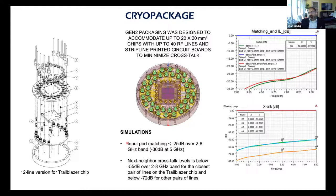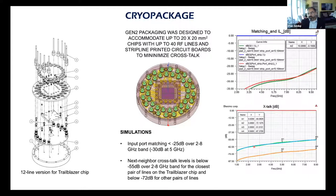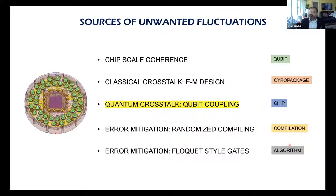This is the cryo package we currently use, wired up for 16 qubits, with versions for 32 and beyond. Simulations confirm insertion loss less than 20 dB and crosstalk suppressed to better than 50–60 dB across all lines. But then quantum mechanics will give you other crosstalk at the level of your chip.